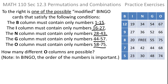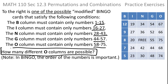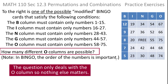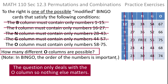With bingo cards the numbers will be unique. And the question is: how many different O columns are possible? Order is important in bingo. This is a lot of information, but the question narrows it down considerably because it only asks about O columns. Nothing about B, nothing about I, nothing about N, nothing about G — none of that matters. It only asks about the O column.